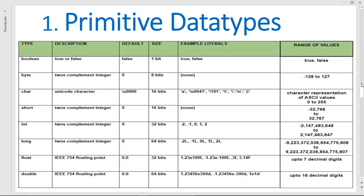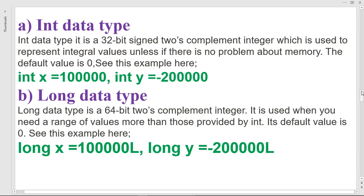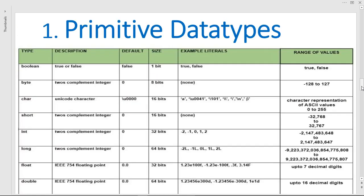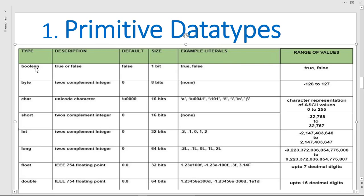Next we have a table explaining more about primitive data types. You can see for boolean — the description is it holds either true or false, the default value is false, the size is one bit, and the example values are true or false.